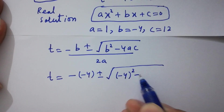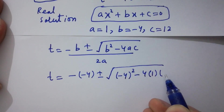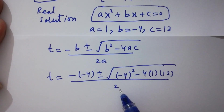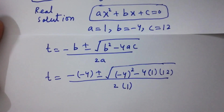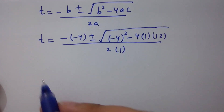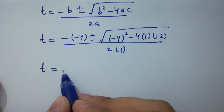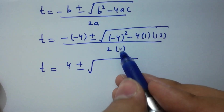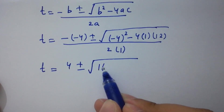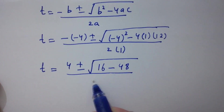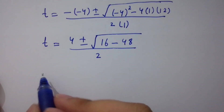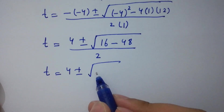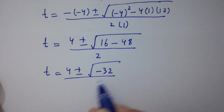Putting in the values: b is minus 4, so minus b is plus 4. Under the square root: minus 4 squared is 16, minus 4 times 1 times 12 is 48. Over 2 times 1, we have 2. So t equals 4 plus or minus square root of 16 minus 48, which gives minus 32, over 2.